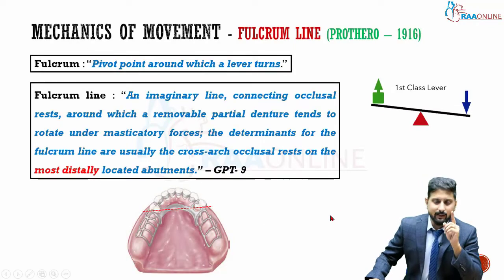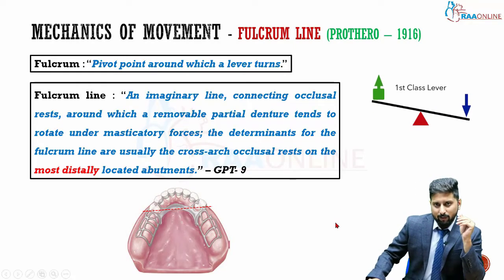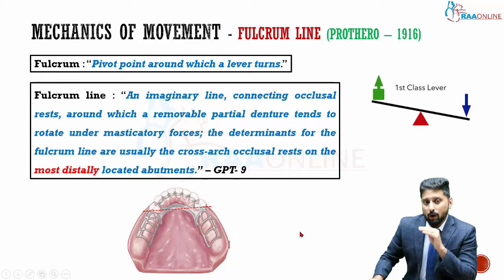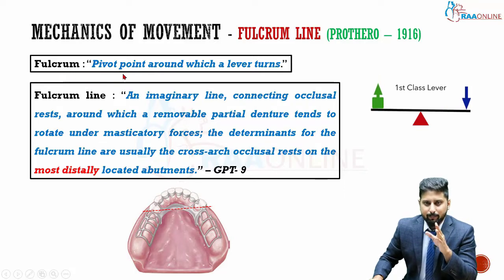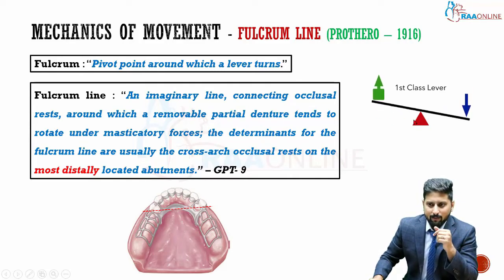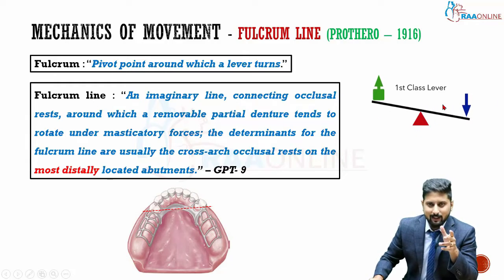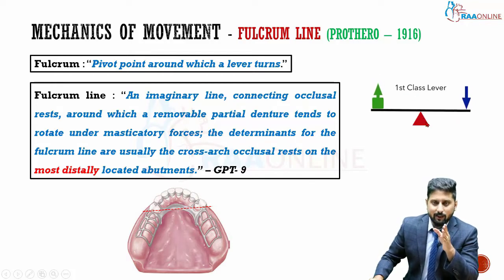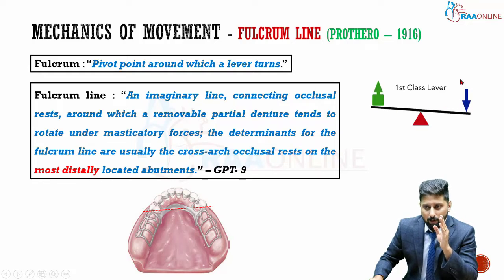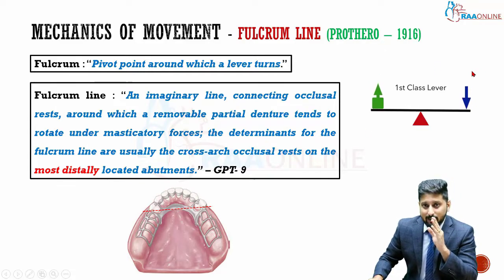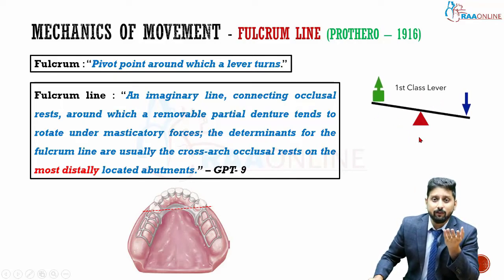Before describing RPD movements, we need to understand the fulcrum. A fulcrum is a pivot point around which a lever turns — like a first-class lever or seesaw. The fulcrum is in the center, and any force applied on one side is transferred equally to the other side in the opposite direction. A fulcrum point is a point around which there is rotational up-and-down movement — the lever rotates rather than moving bodily.